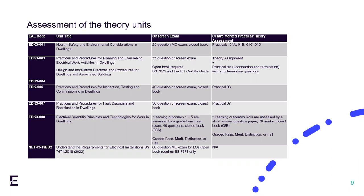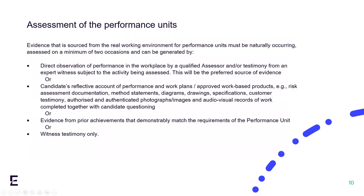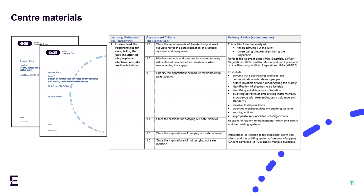All units and centre assessment materials for the qualification can be downloaded from the EAL online services. Assessments of the performance units are the same as the current electrotechnical qualification, requiring evidence from the workplace and assessment by a competent and qualified assessor. The qualification will require observation in the workplace by an assessor, and at least one of the direct observations will need to be a physical face-to-face between the assessor and the learner. We are currently going through a rebranding process and this is an overview of how the knowledge units look in a simple scheme of work format.